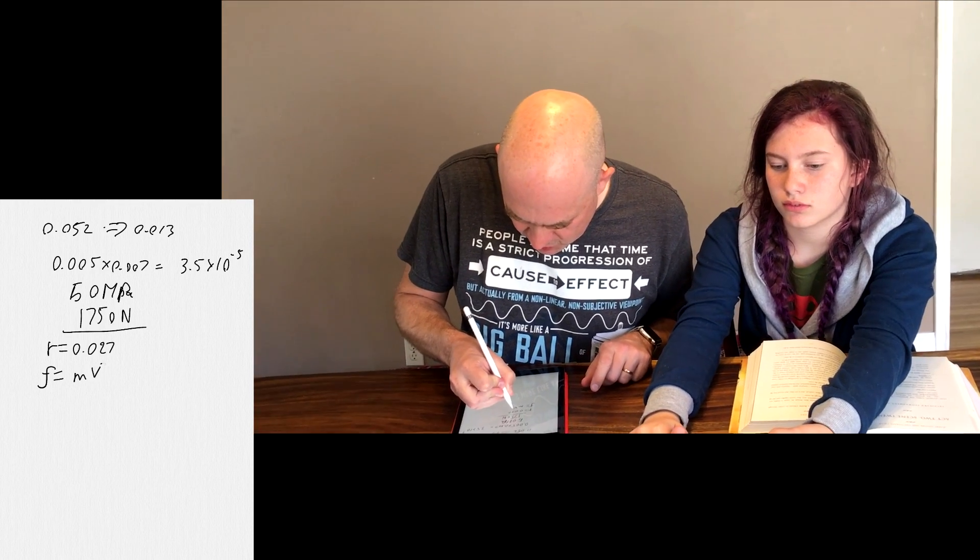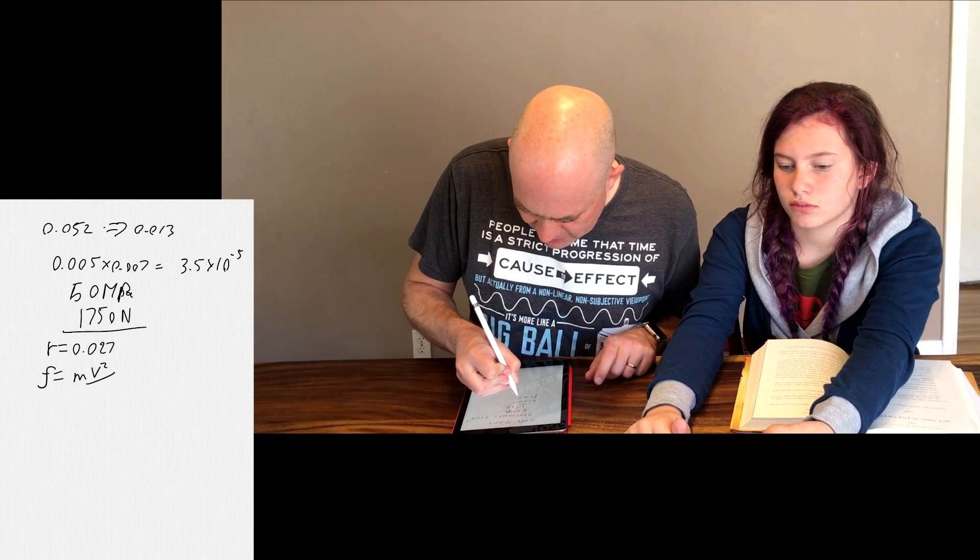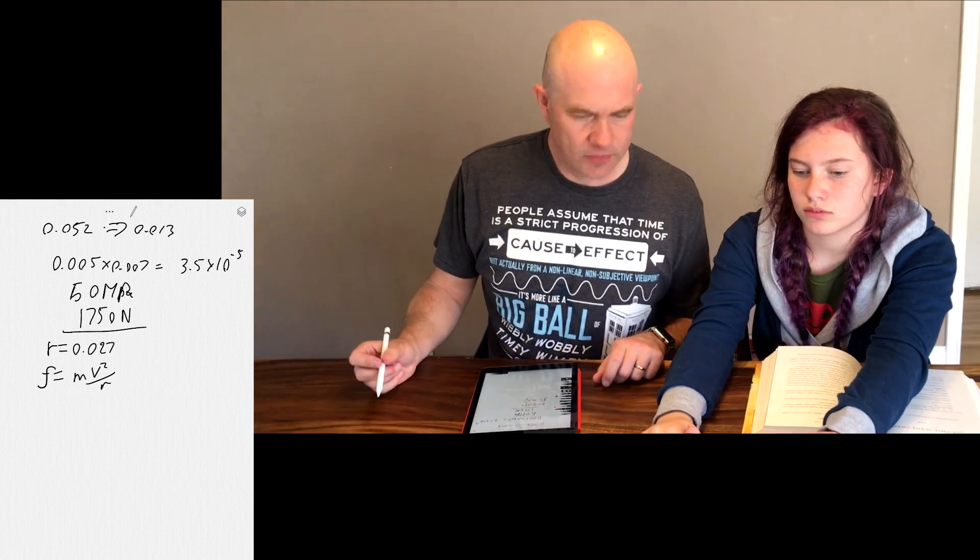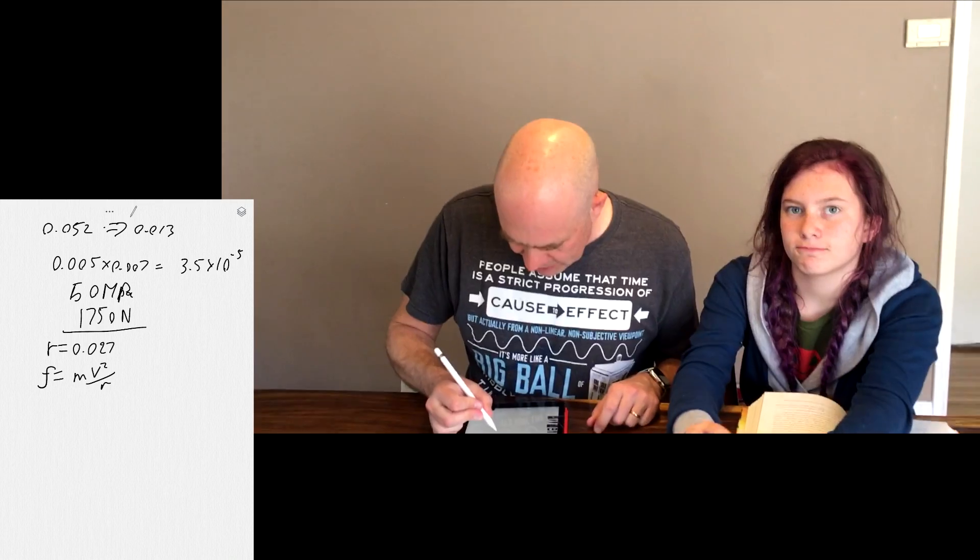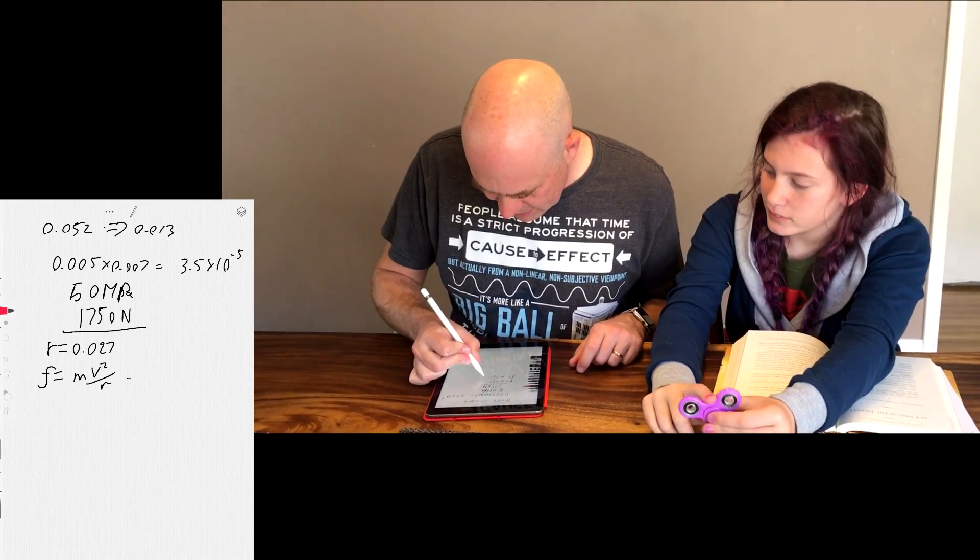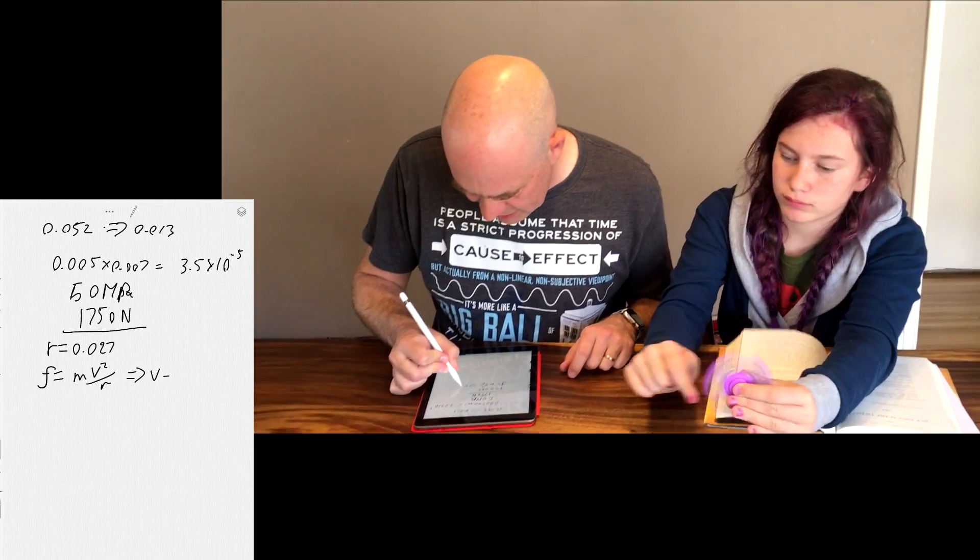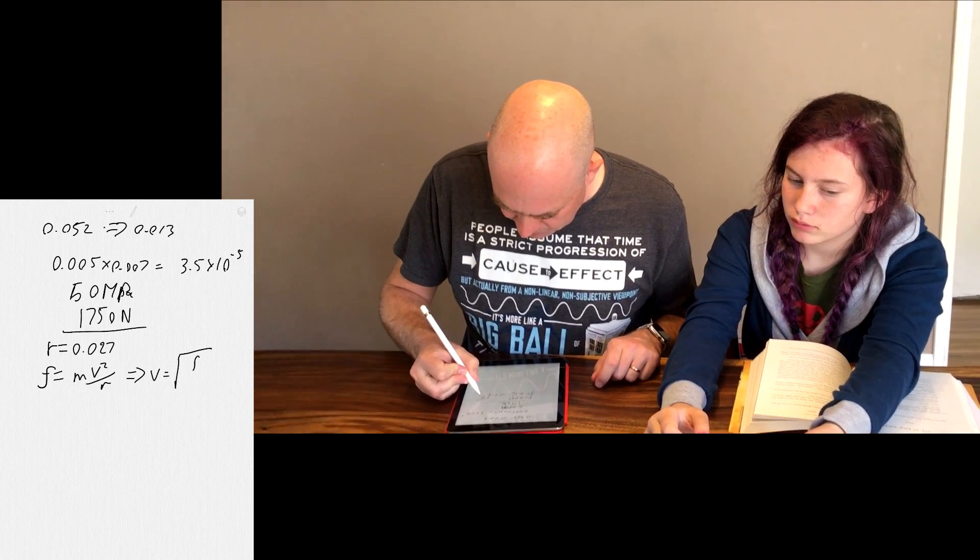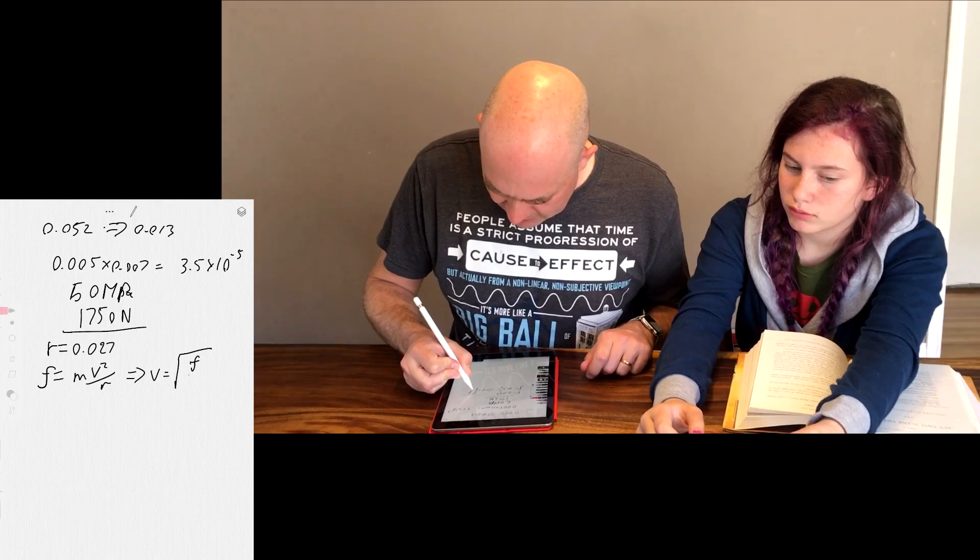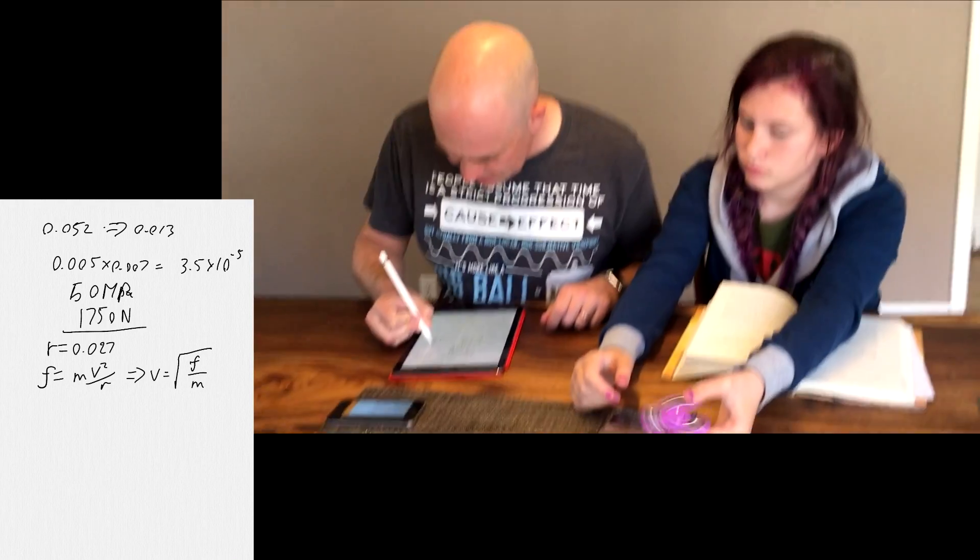times the velocity squared divided by the radius of rotation for a centripetal force. And flipping that around, that implies that the maximum velocity is equal to the square root of the force times the radius divided by the mass.